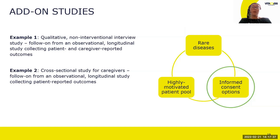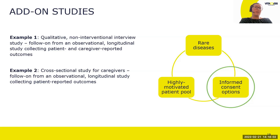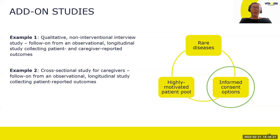A couple of examples of add-on studies: a qualitative non-interventional interview as a follow-on from a longitudinal observational study collecting patient and caregiver reported outcomes, and a cross-sectional study for caregivers as a follow-on from an observational study collecting patient reported outcomes. A key point here is the importance of informed consent options — specifically, the option to consent to being contacted about further research. This is especially important in rare diseases because you have a very valuable pool of patients you don't want to lose.